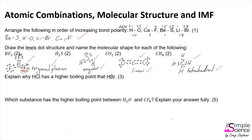The next question asks us to explain why HCl has a higher boiling point than HBr. The starting point is always to compare bond polarity. The electronegativity difference between hydrogen and chlorine is 0.9, whereas in hydrogen bromide the electronegativity difference is slightly smaller at 0.7. Therefore HCl is the more polar molecule.